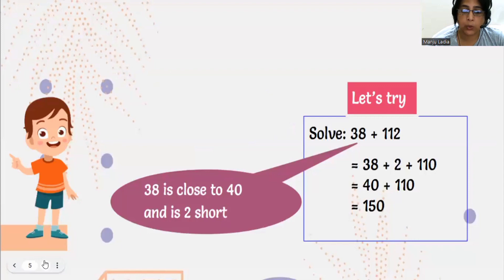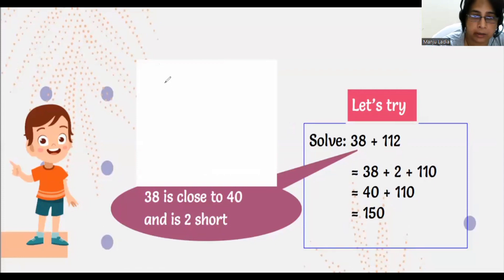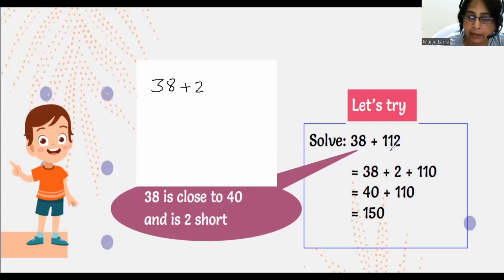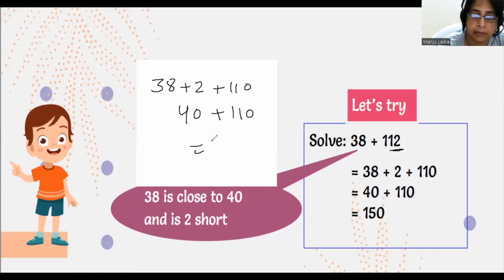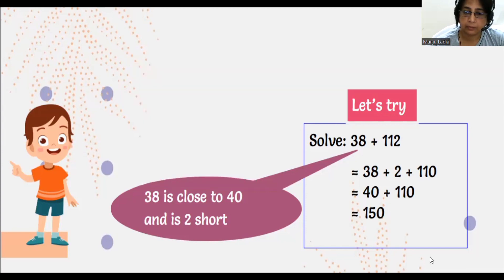38 plus 112. 38 is close to 40. So from where will we take this 2? We will take this 2 from 112. So it will become 110. So 38 plus 2 becomes 40, plus 110 — it will become 150. Without carrying, we will add the things. It will be very beneficial, especially for students up to age 6 to 10.